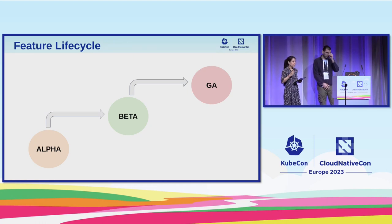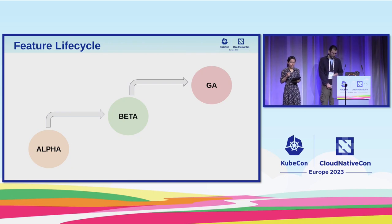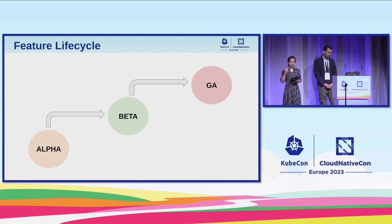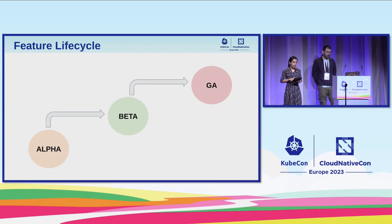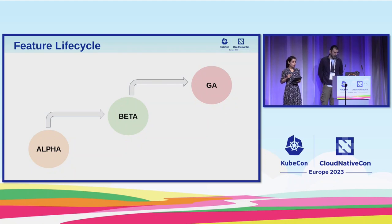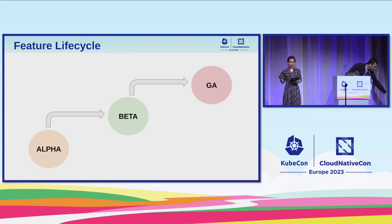It's important to understand this whole process because it's a structured process to facilitate a proposal, development, testing, as well as the final release of the feature into the Kubernetes platform. This process starts from an unstable alpha, goes through to the feature-complete beta state, and finally to the stable GA state.